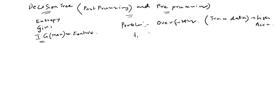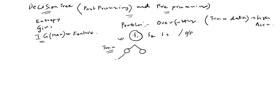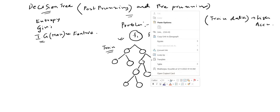Let's consider we have three features — f1, f2, f3 — and we have some binary outputs. Let's assume that using f1 we are doing our first root node, then using the training data we are doing some splitting, and the tree is growing something like this.